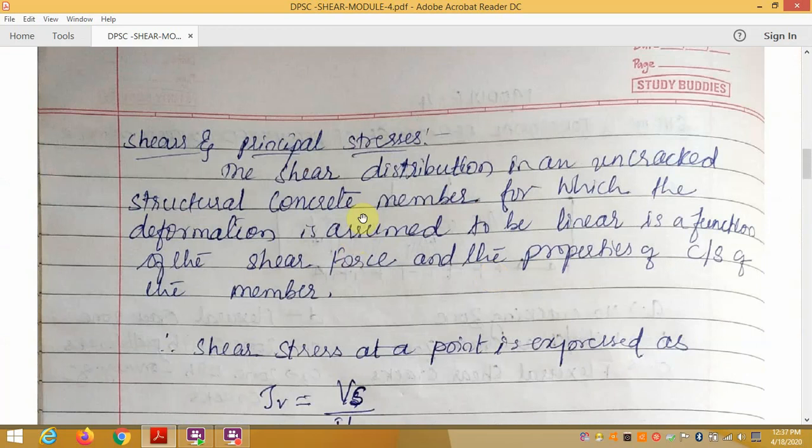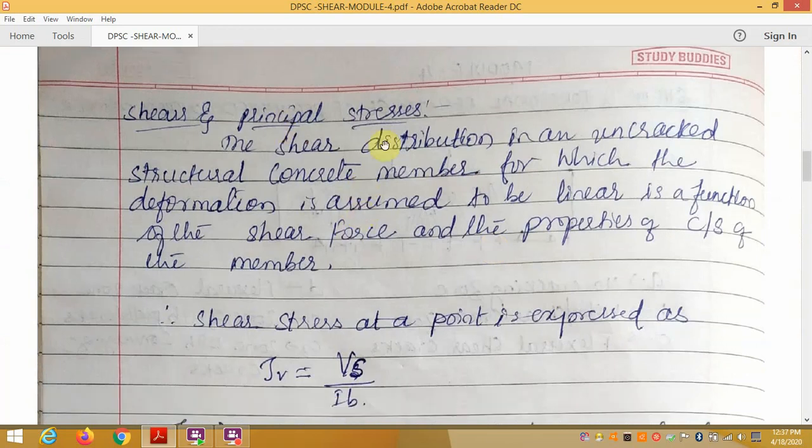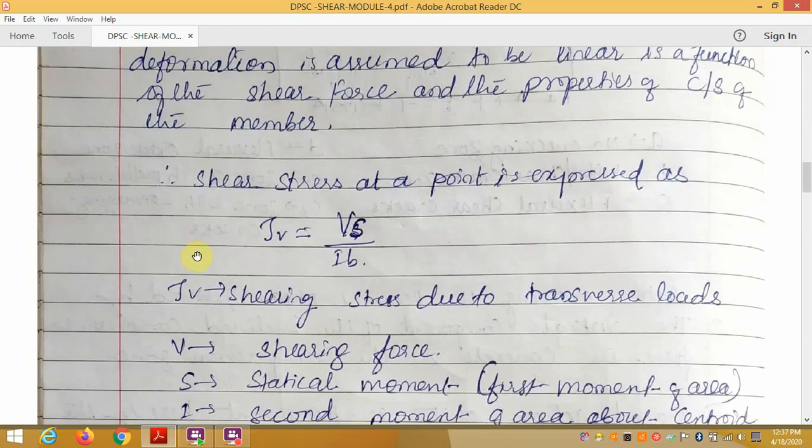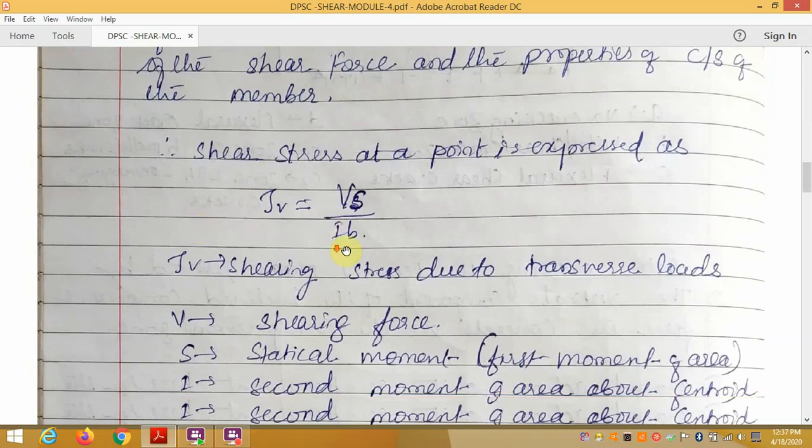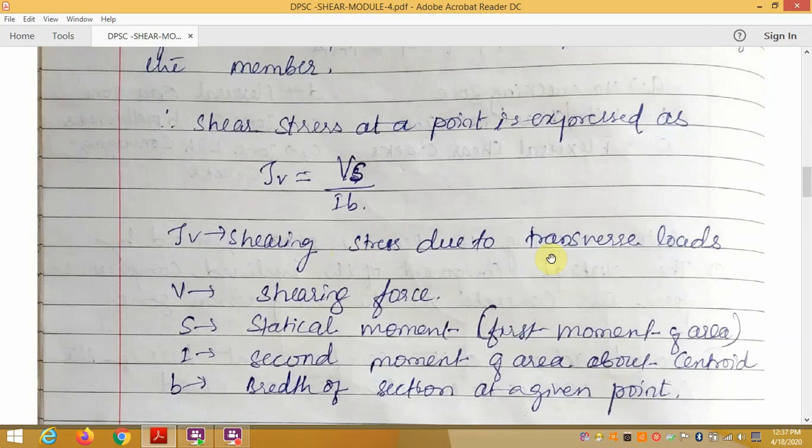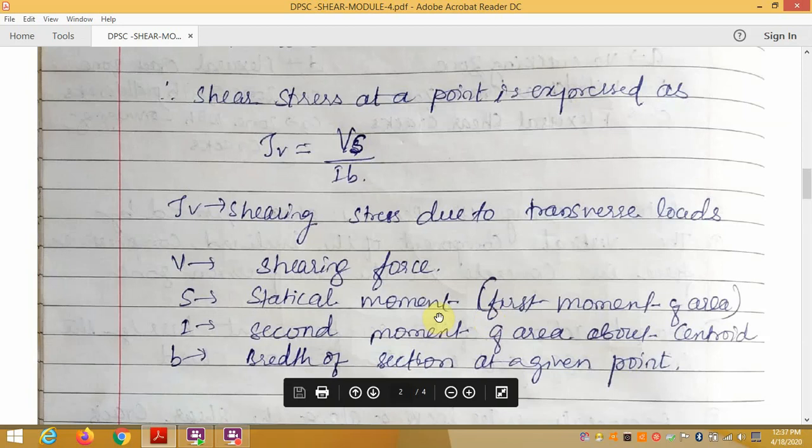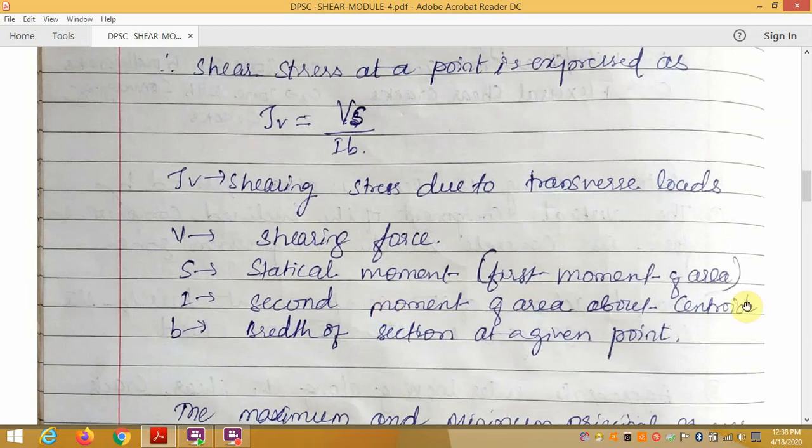Shear and principal stresses. The shear distribution in an uncracked structural concrete member for which the deformation is assumed to be linear is a function of the shear force and the properties of the cross-section of the member. Therefore, shear stress at a point is expressed as Tau V equals V times S divided by I times B, where Tau V is the shearing stress due to the transverse load, V is the shearing force, S is the static moment also called first moment of area, I is the second moment of area about the centroid.